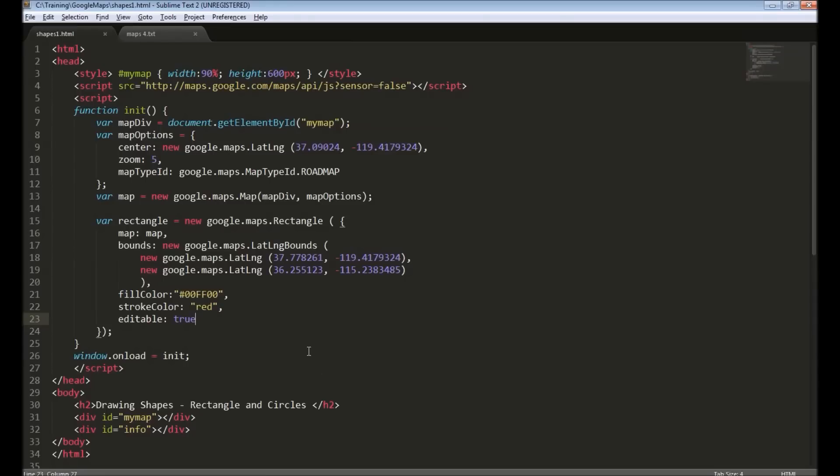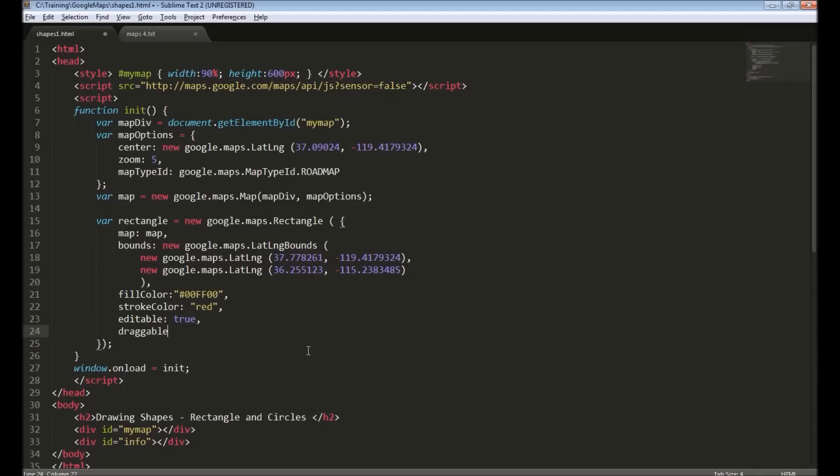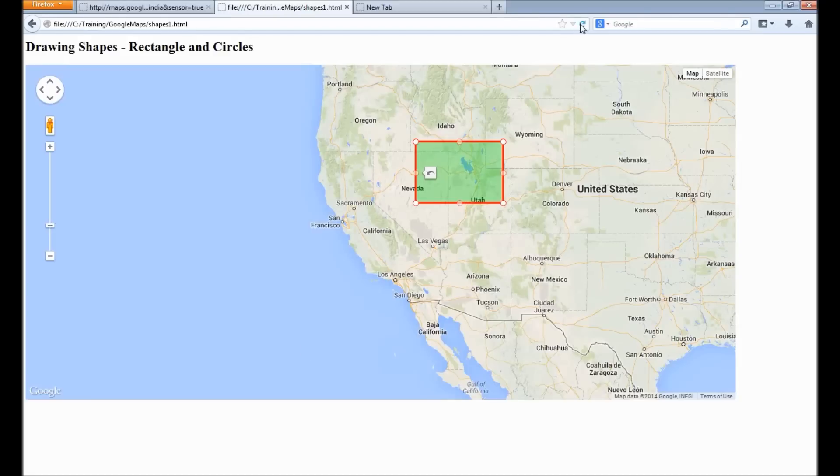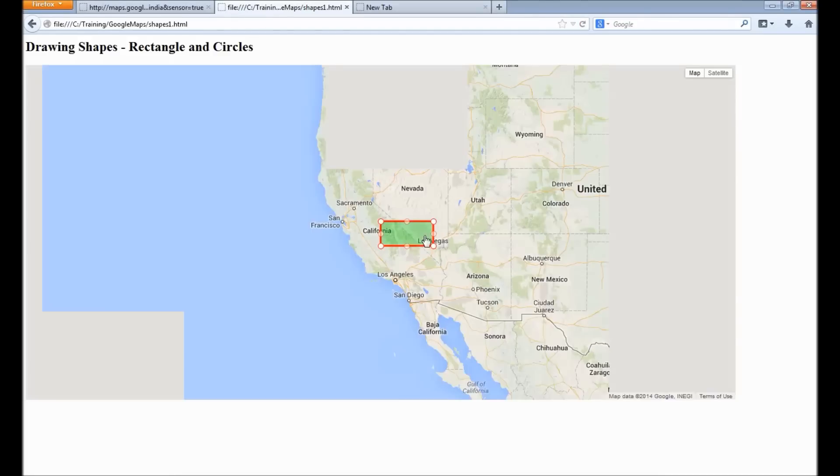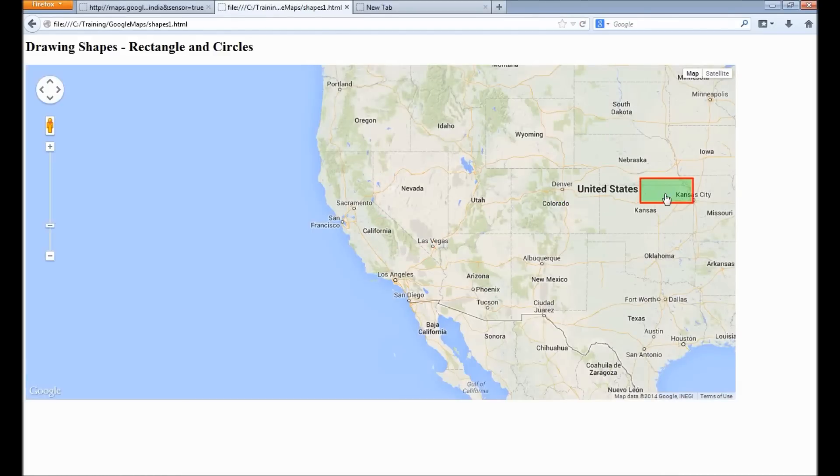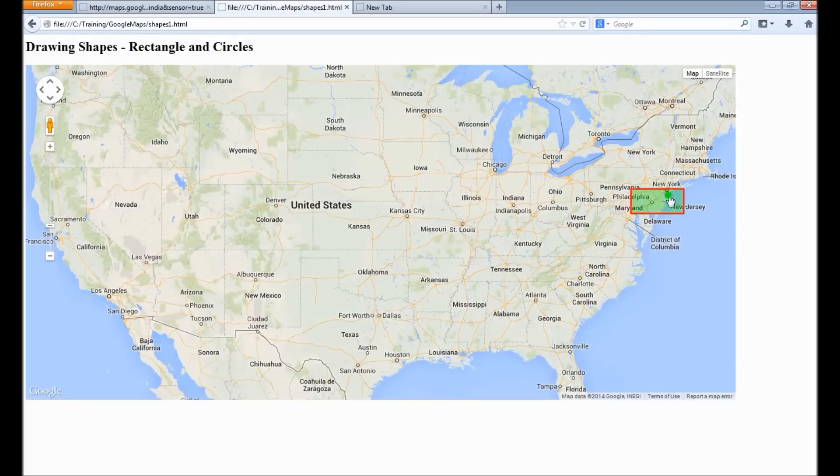Similarly we can make the rectangle move around. We make it draggable by using a draggable attribute, set it to true. Now reload. Now we can move this rectangle around, move it somewhere here, and also resize it.